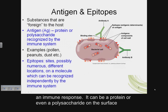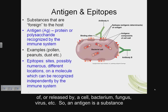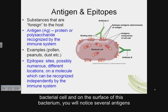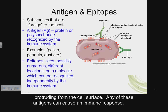It is now time to address some vocabulary. The word antigen means anything that can elicit an immune response. It can be a protein or even a polysaccharide on the surface of or released by a cell, bacterium, fungus, virus, etc. An antigen is a substance that is recognized as foreign by the host immune system. In this picture, you see a bacterial cell with several antigens protruding from the cell surface — any of these antigens can cause an immune response.